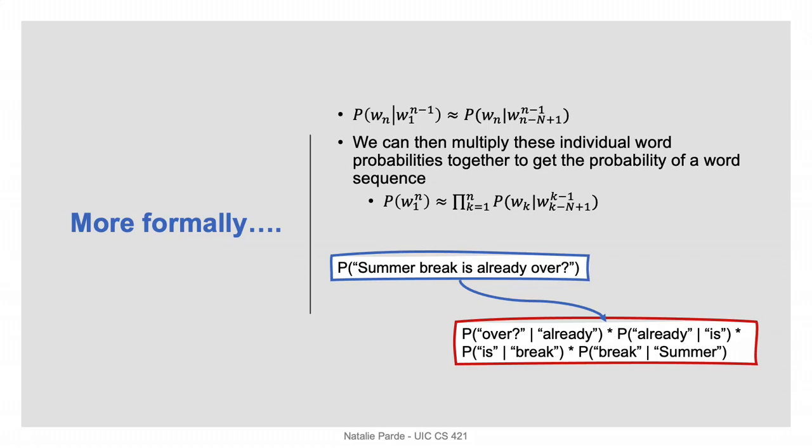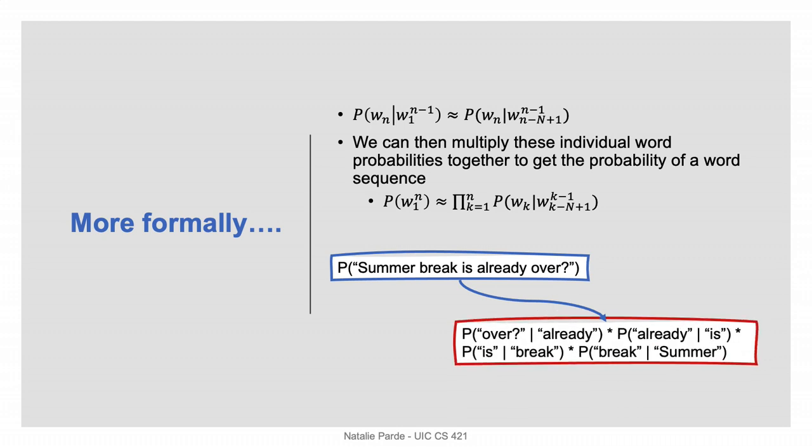This is formalized using the equation that you see here. If we want to find the probability of an entire word sequence, for example an entire sentence, we can just multiply our individual n-gram probabilities together. For example, if we're working with a bigram language model and we want to figure out the probability of the sentence summer break is already over, we can multiply the probability of over given already times the probability of already given is times the probability of is given break times the probability of break given summer.